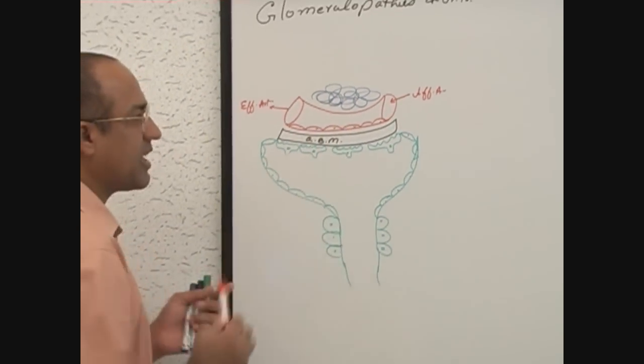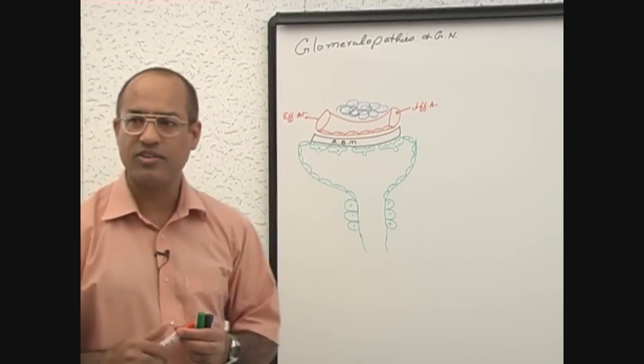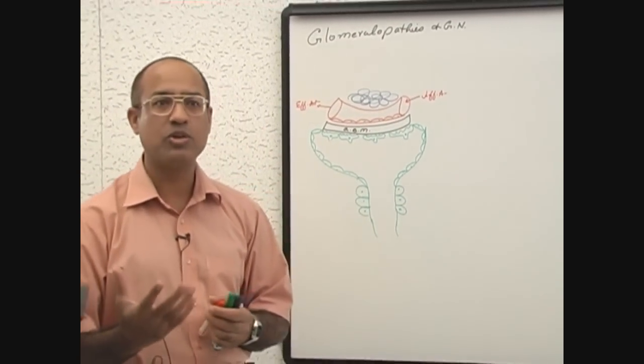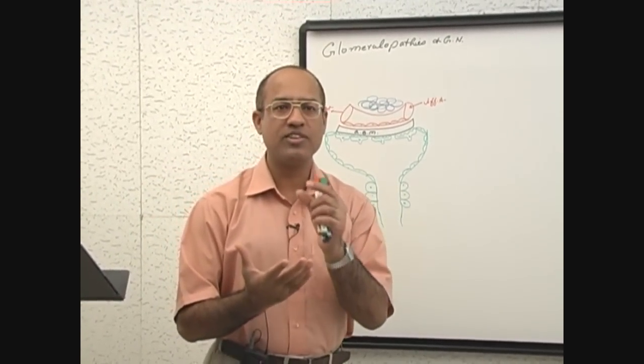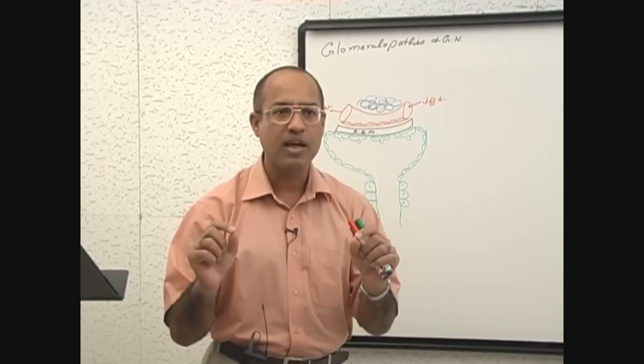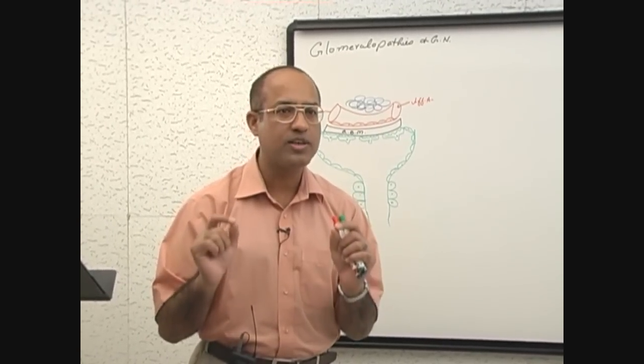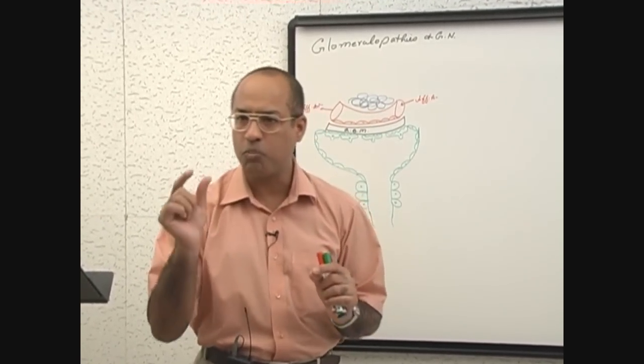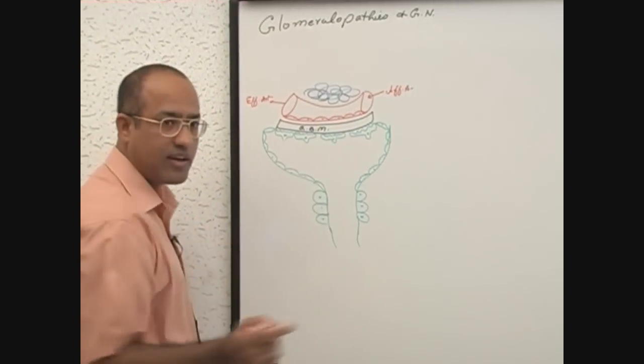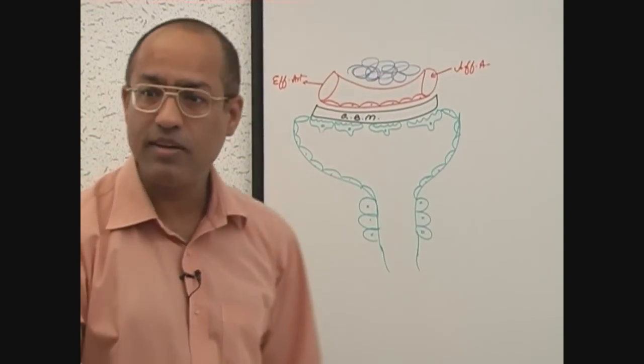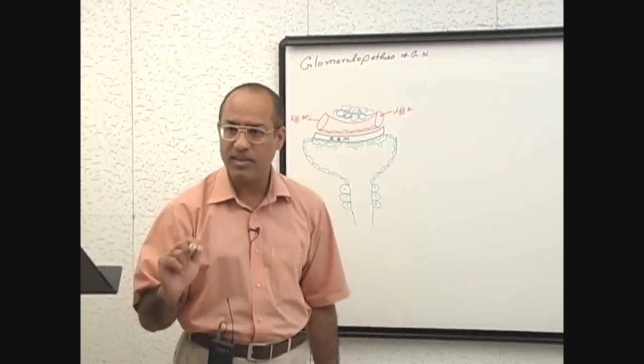These endothelial cells are fenestrated cells. When we say endothelial cells are fenestrated cells, it means that there are fenestrations present within the endothelial cells. What are fenestrations? Fenestrations are the pores. These endothelial cells are porous, they are having fenestrations.